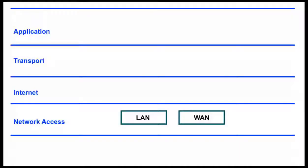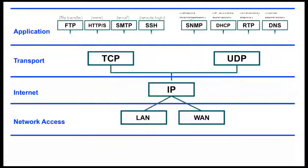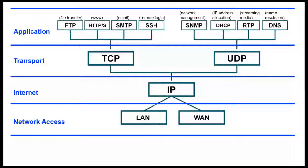Network Communications involves a suite of protocols known as the Internet Protocol Suite, or more commonly known as the TCP/IP Protocol Suite. This protocol suite includes all the protocols used in various aspects of end-to-end network communications, including addressing, routing, and reliability. The TCP/IP Protocol Suite is also a conceptual model that classifies and organizes the various protocols.